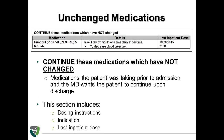The 'continue this medications which have not changed' section, the third portion of the discharge medication list, provides information about medications that the patient was taking prior to admission and emphasizes that the patient should continue taking these medications as they were prior to the hospital admission. Similar to the last section, this section also includes the appropriate dosing instruction, indication, and last inpatient dose.